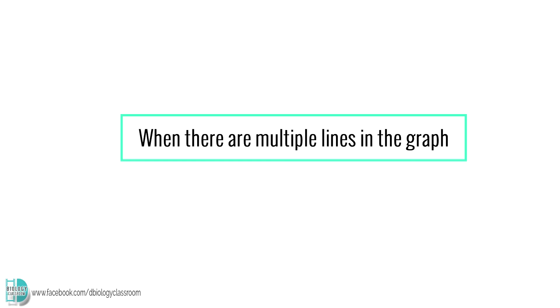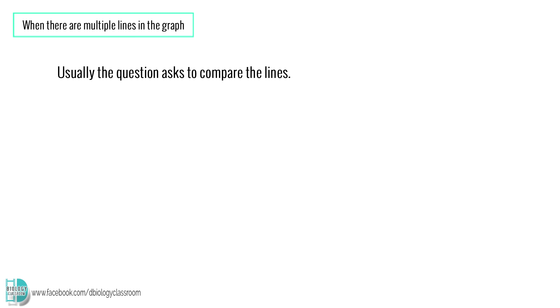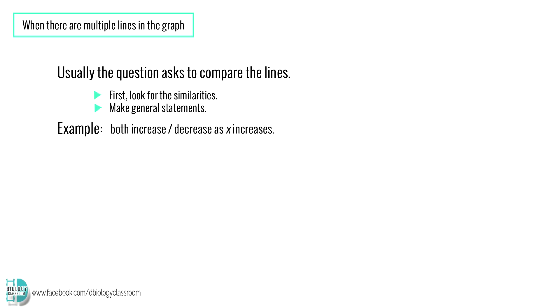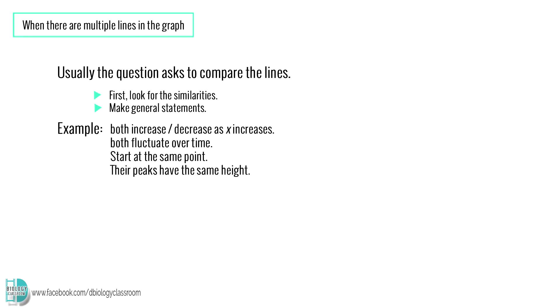Usually, if there's more than one line in the graph, the question will not just ask you to describe them — it normally will ask you to compare them. The first thing you have to do is look for the similarities and make general statements which are true for both of them. For example: both increase or decrease as the x-axis increases; both fluctuate over time; they have the same starting point; or their peaks have the same height.